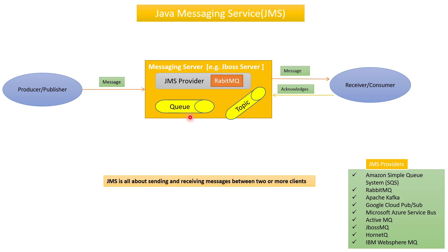The messaging server works using a JMS provider — JMS provider is essentially JMS APIs. We have several JMS providers: the most popular is RabbitMQ, and we also have ActiveMQ, JBoss MQ, IBM MQ, Apache Kafka, and Amazon Simple Queue Service, among other messaging queues.